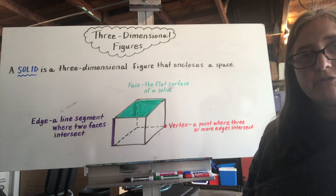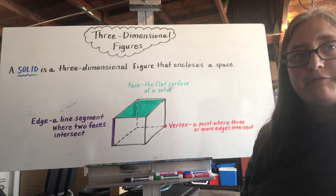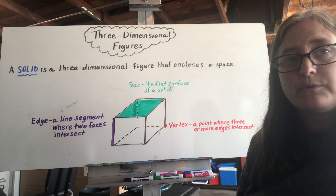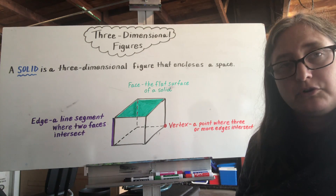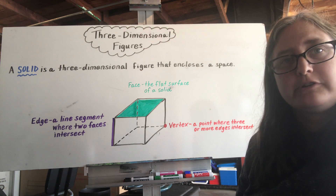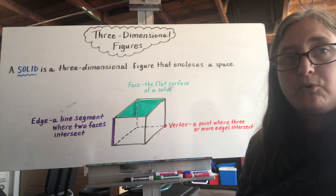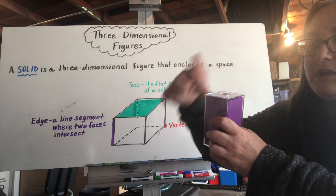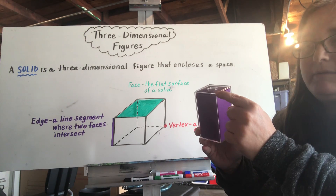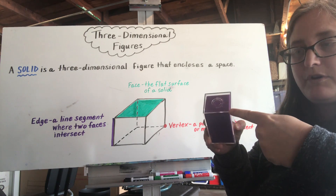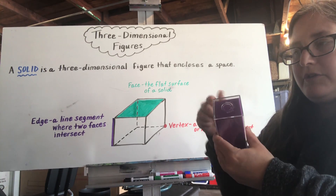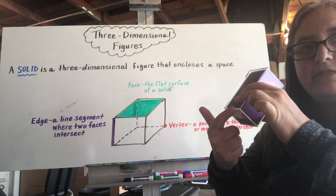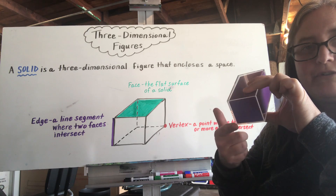The third characteristic we're going to talk about are vertices. Vertices are basically corners of our three-dimensional shapes. A single corner would be referred to as a vertex; plural corners are called vertices. A vertex is basically the point where three or more edges intersect. On this shape, I've got edges coming together to form this point — this is my vertex, it's my corner of the shape. I've got corners along the top and along the bottom. Anytime you have a corner, that's a vertex; multiple corners are vertices.